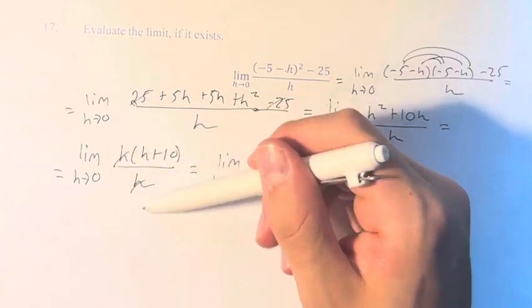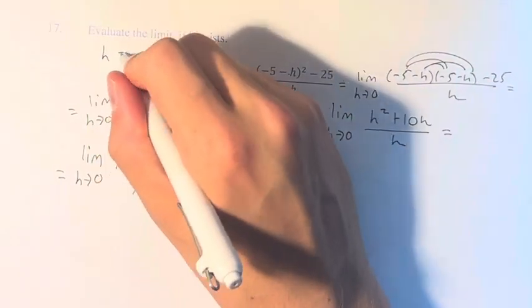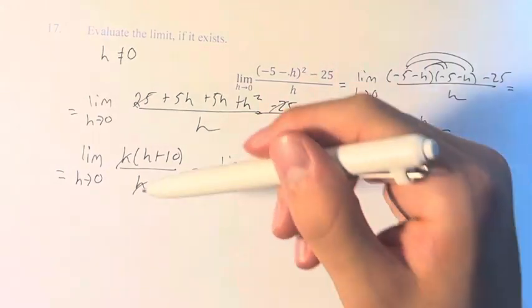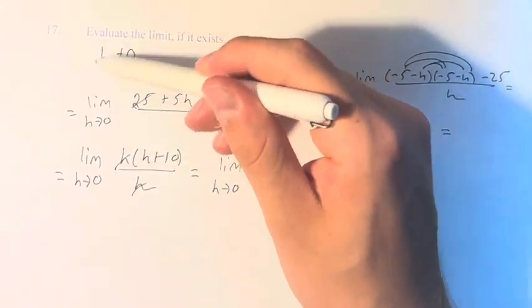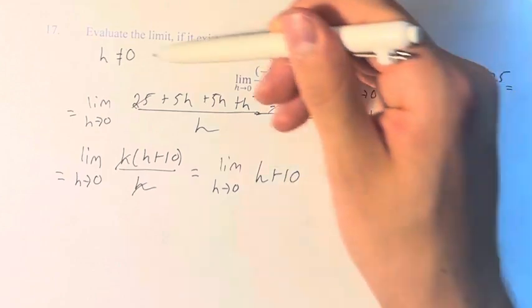The reason that we can cancel this out without worrying about the domain restriction, which is that the denominator h cannot equal 0: normally when you cross things out you have to worry about specifying that, but we also have to remember that domain restriction.